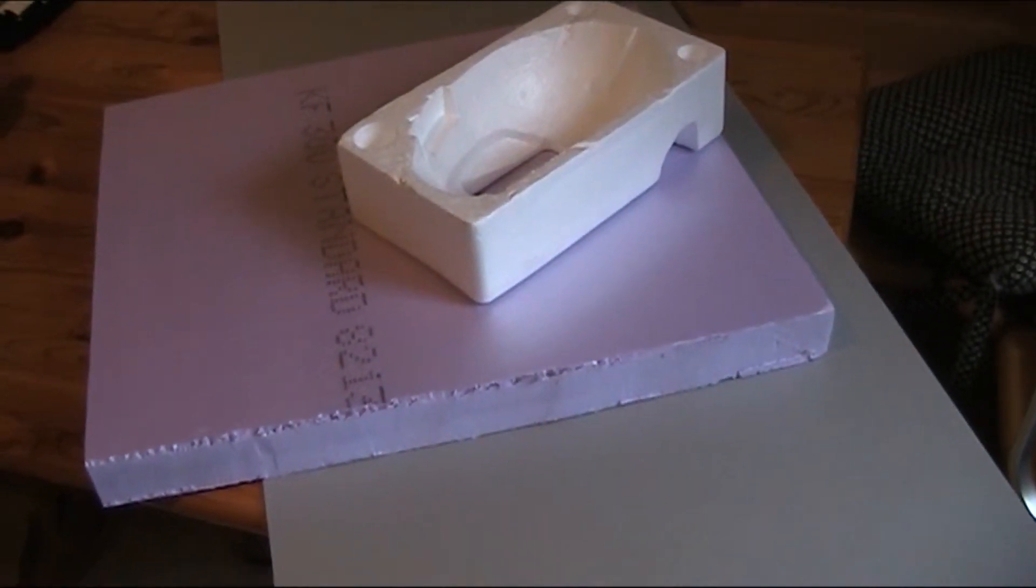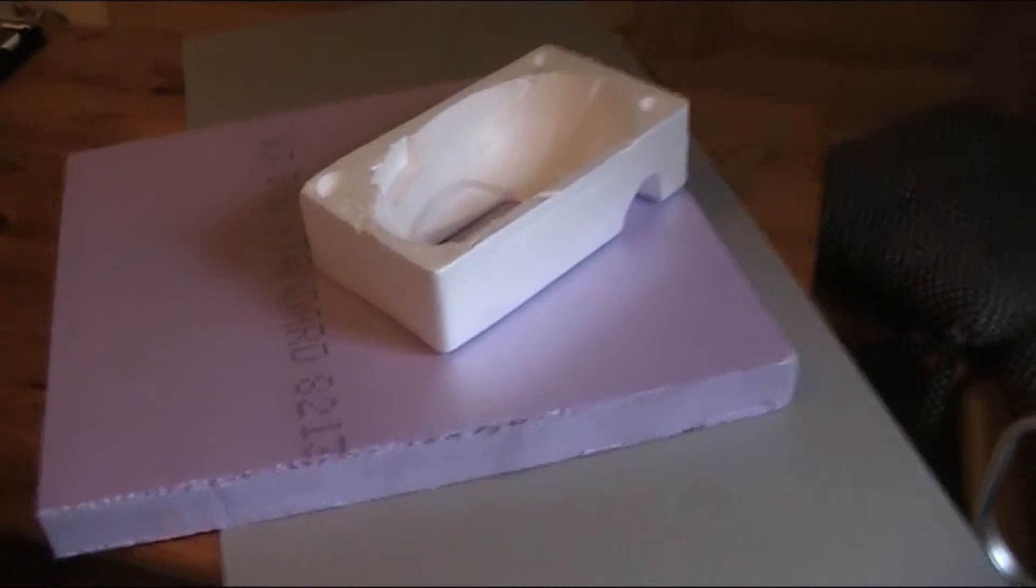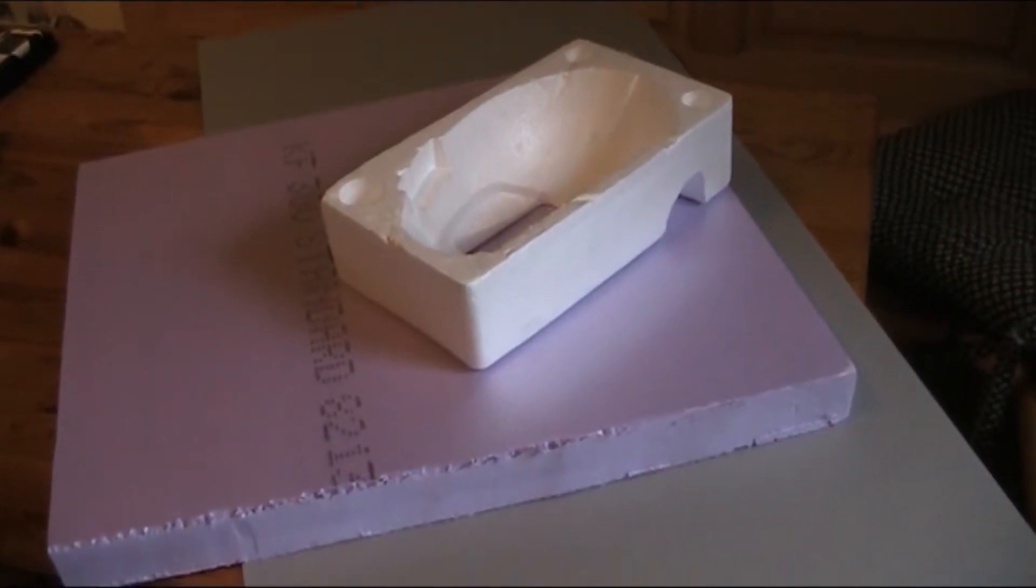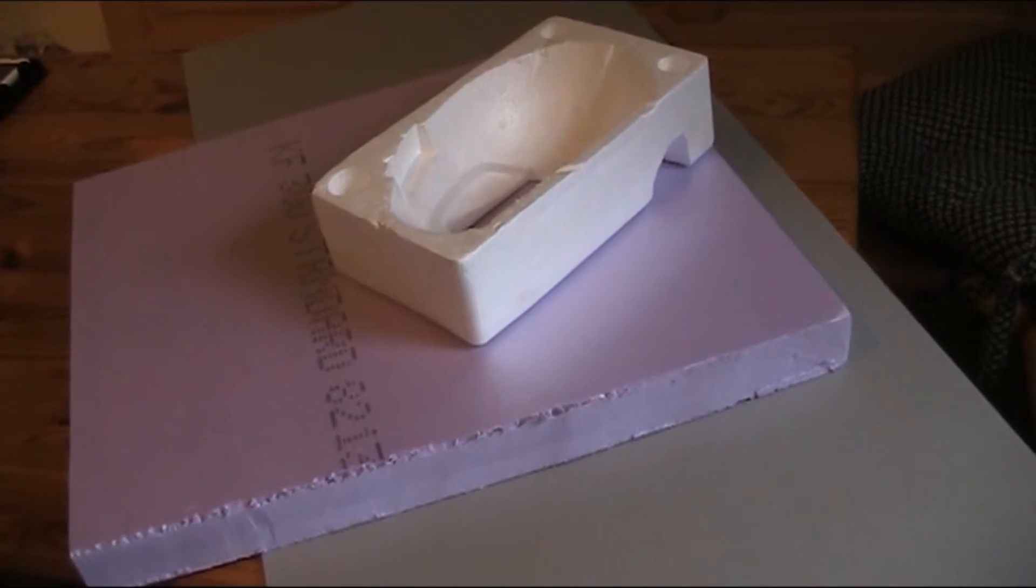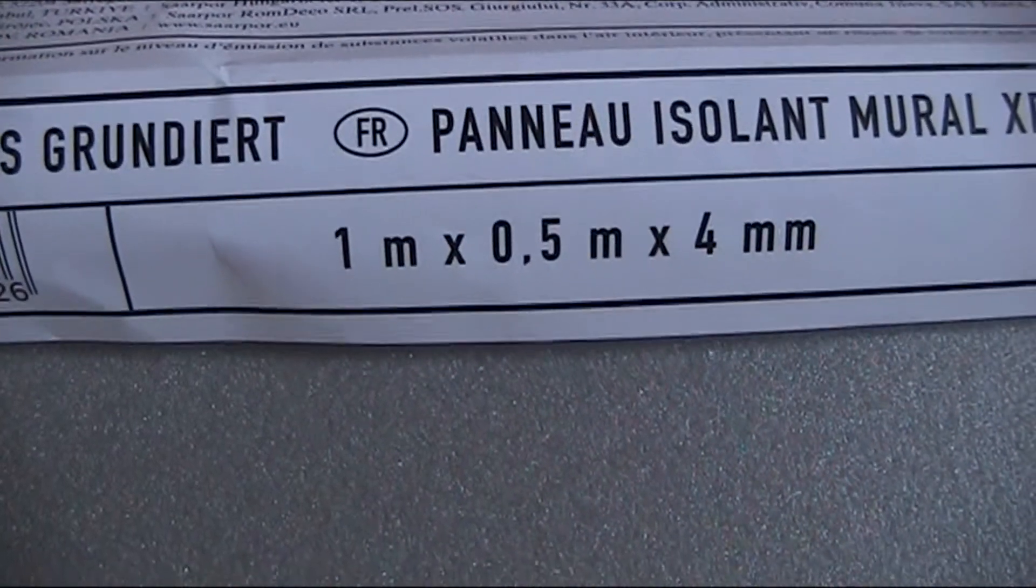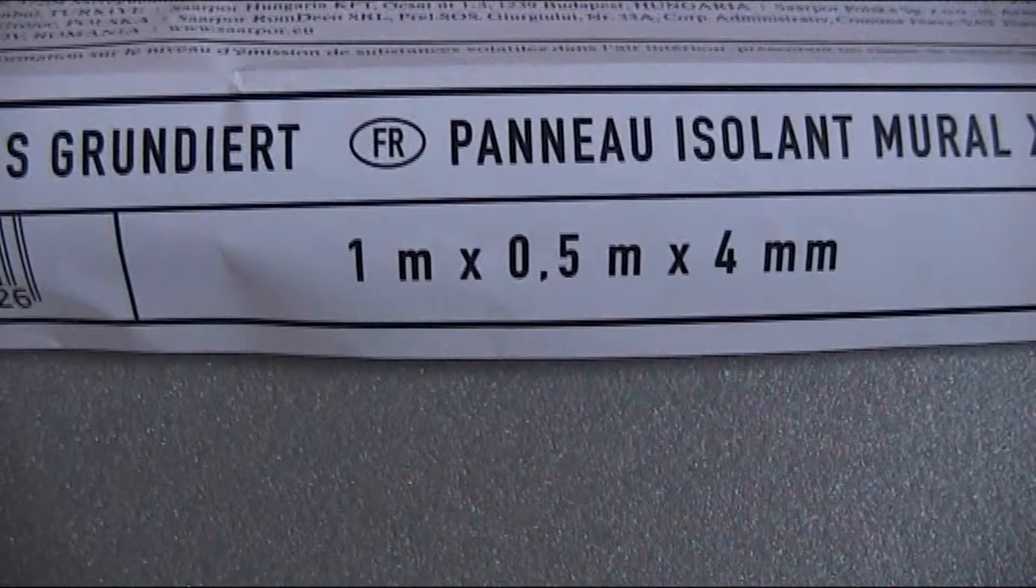Most of the time I use pink insulation foam and sometimes the white stuff that comes with packages. But I also use a gray indoor insulation foam called Klima Pore. The thickness is 4 millimeters.